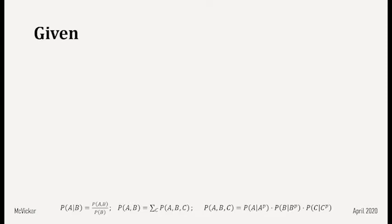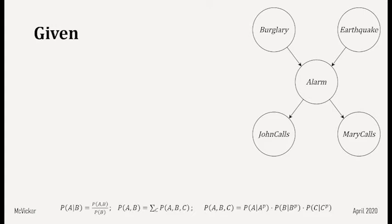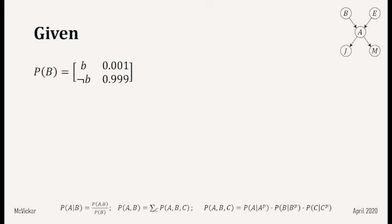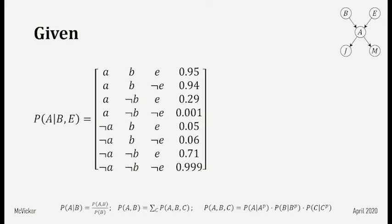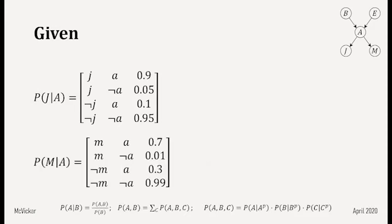Let's get into the example problem. We're given this alarm network — a burglary or earthquake could trigger an alarm, and that alarm going off could cause neighbor John or neighbor Mary to call you. We'll refer to each variable by its first letter. We're given P(B), P(E), and since we're working with Boolean values, P(false) = 1 - P(true). We're also given P(A|B,E), P(J|A), and P(M|A).